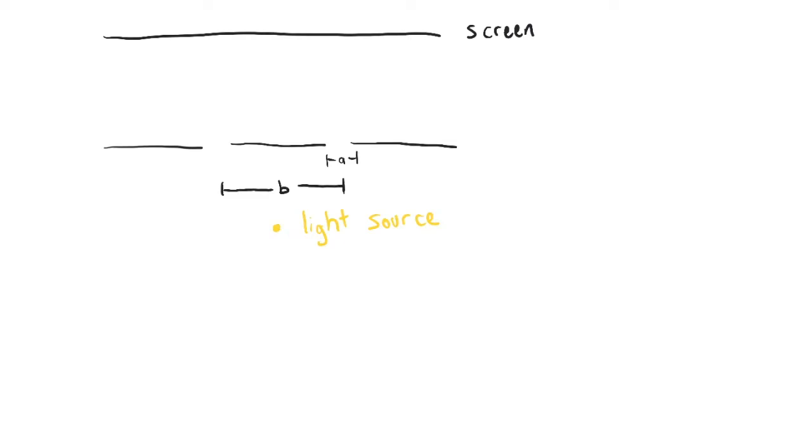And you might say there's a third length scale, the distance from this wall with the slits in it to the screen. But we're assuming that length is very very big, and so that when the light reaches the screen it's effectively a plane wave. And so A and B are the only length scales that we need to concern ourselves with. And so what is the result? How does the pattern of brightness on the screen look?